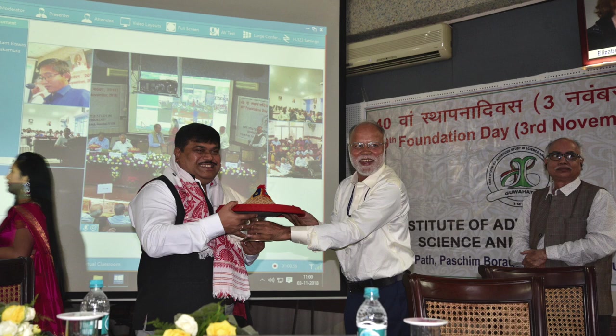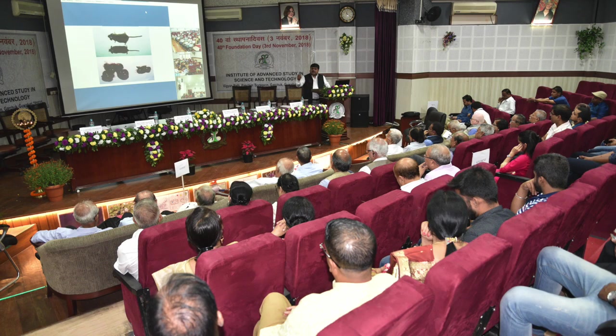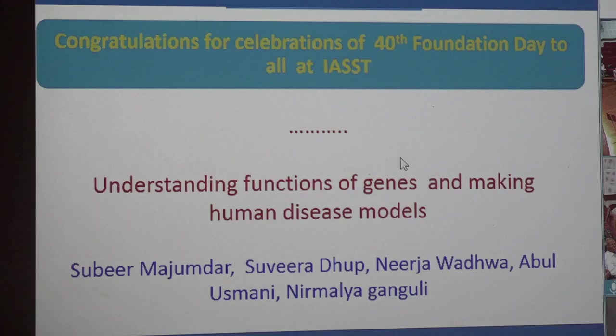Congratulations on the 40th foundation day to all at IISST. I'll be mainly talking about understanding functions of genes and making human disease models. Here are two notable scientists: Barbara McClintock, who got a Nobel Prize for jumping genes — DNA can jump from one place to another — and Ada Yonath, who discovered the structure of ribosomes, which is important for making proteins inside the body.